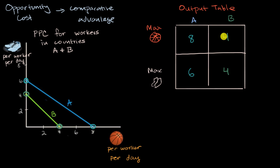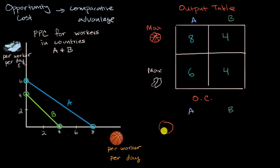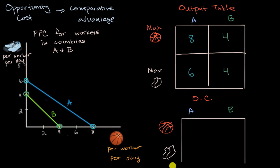Now with the information in both the output table and these production possibility curves, let's calculate the opportunity cost. I'll set up an opportunity cost table for country A and country B, thinking about the opportunity cost of producing basketballs in terms of pairs of shoes, and the opportunity cost of producing pairs of shoes in terms of basketballs. Pause this video and see if you can fill in this table.